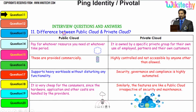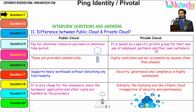Here is the first question: what is the difference between public cloud and private cloud? Public cloud is like viewing a film in a cinema theatre, whereas private cloud is like viewing a film at home using a DVD. With a public cloud, you pay for whatever resource you need at whatever time period.